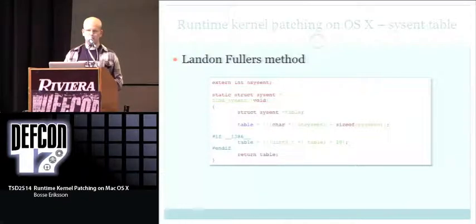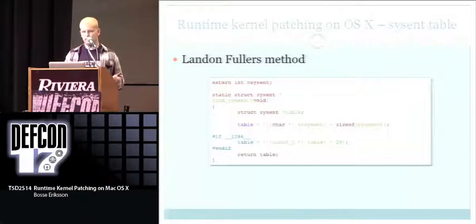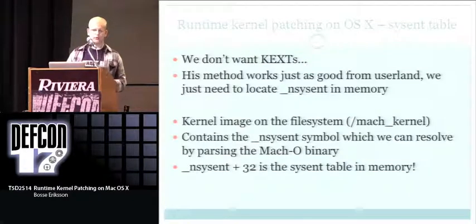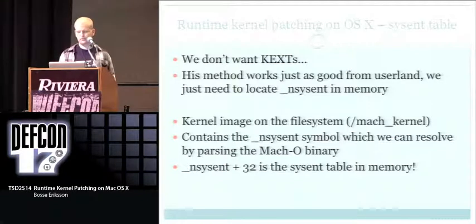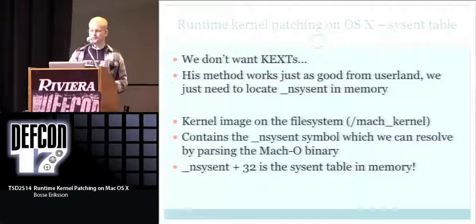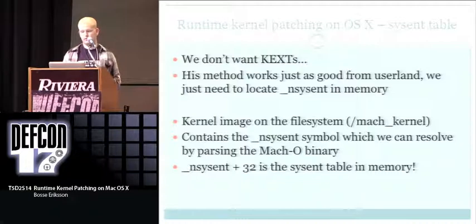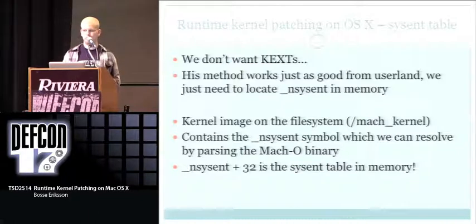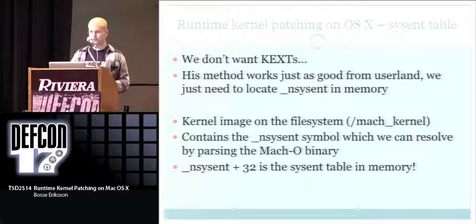Before OSX 10.3, the sysent table was exported and accessible directly from a kernel extension, but not anymore — you need to locate it in memory. To do this from user land, we just need to locate nsysent in memory. The kernel image on the filesystem is called mach_kernel in slash, and it contains the nsysent symbol, which can be resolved by parsing the Mach-O binary. Take that symbol plus 32 bytes and there you have the sysent table — no kernel extension needed.